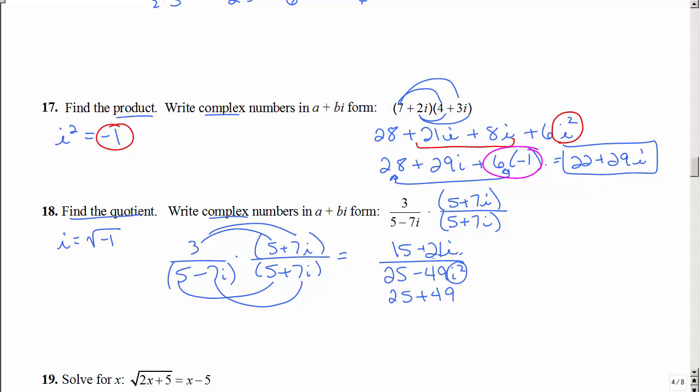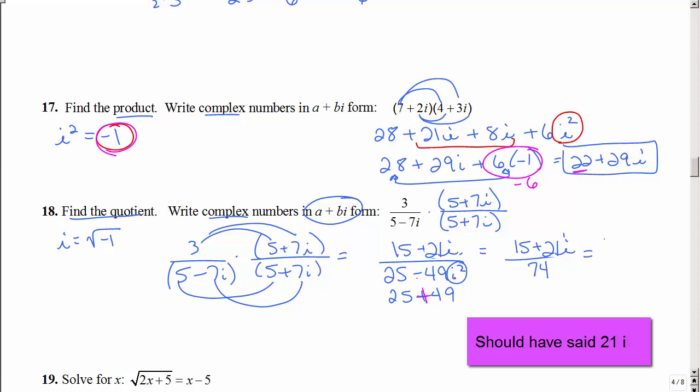So just like up here, that became a negative 6, and that's how I got 22. i squared is negative 1, so negative times that negative, that's where I'm getting that plus from. So I have 15 plus 2i over, I believe, that is 74, and it asks us to write our answer in a plus bi form, so I'm going to split that fraction up, and write my answer like this.